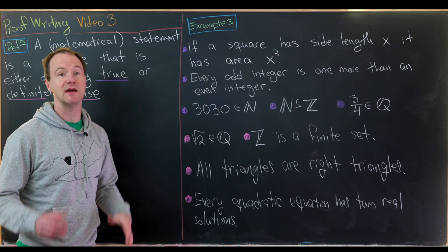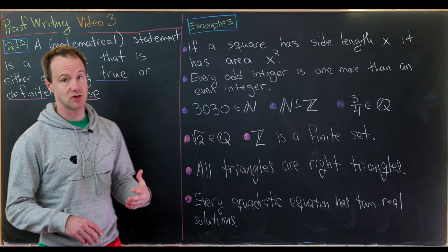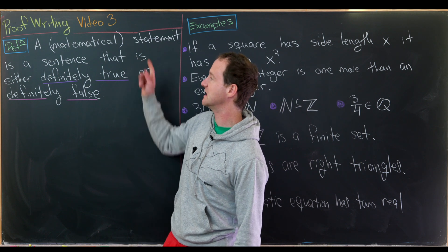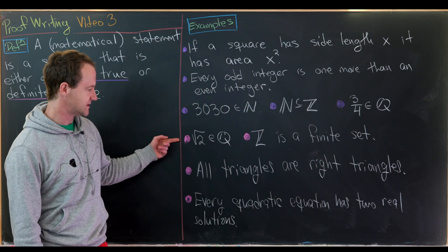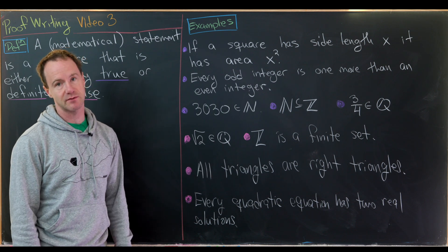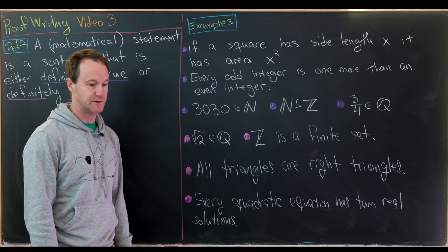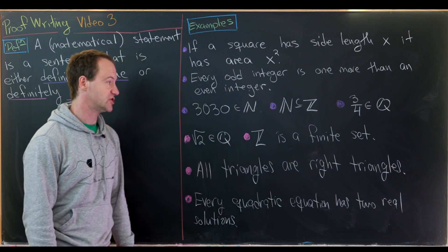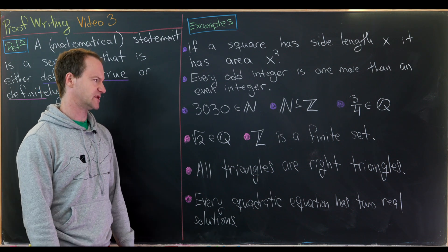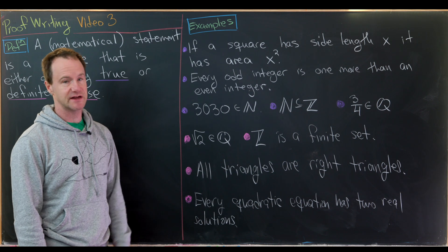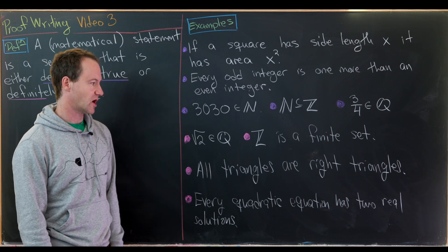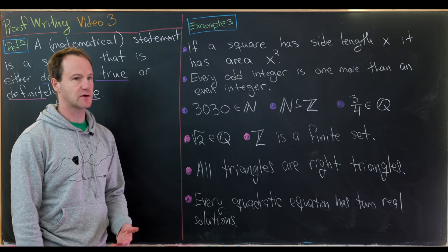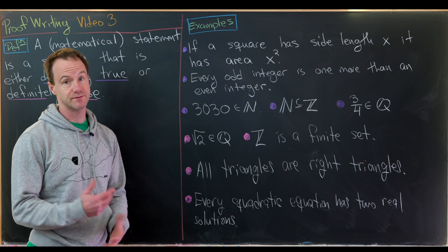Now for some false mathematical statements — they're still mathematical statements, as long as a sentence is definitely true or definitely false. The first: the square root of two is a rational number — this is false; it's well known that √2 is irrational, and we'll prove that later in the course. Next: the set of all integers is a finite set — clearly false, as the integers form an infinite set. And: all triangles are right triangles — false, since equilateral triangles, for example, are not right triangles.